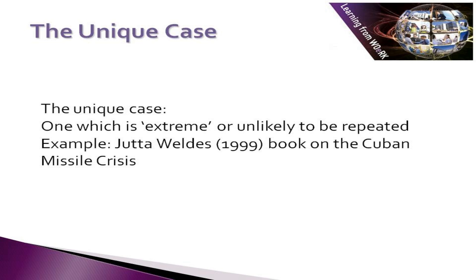The second is the unique case — one which is extreme or unlikely to be repeated. For example, Jutta Weld's 1999 book on the Cuban Missile Crisis.